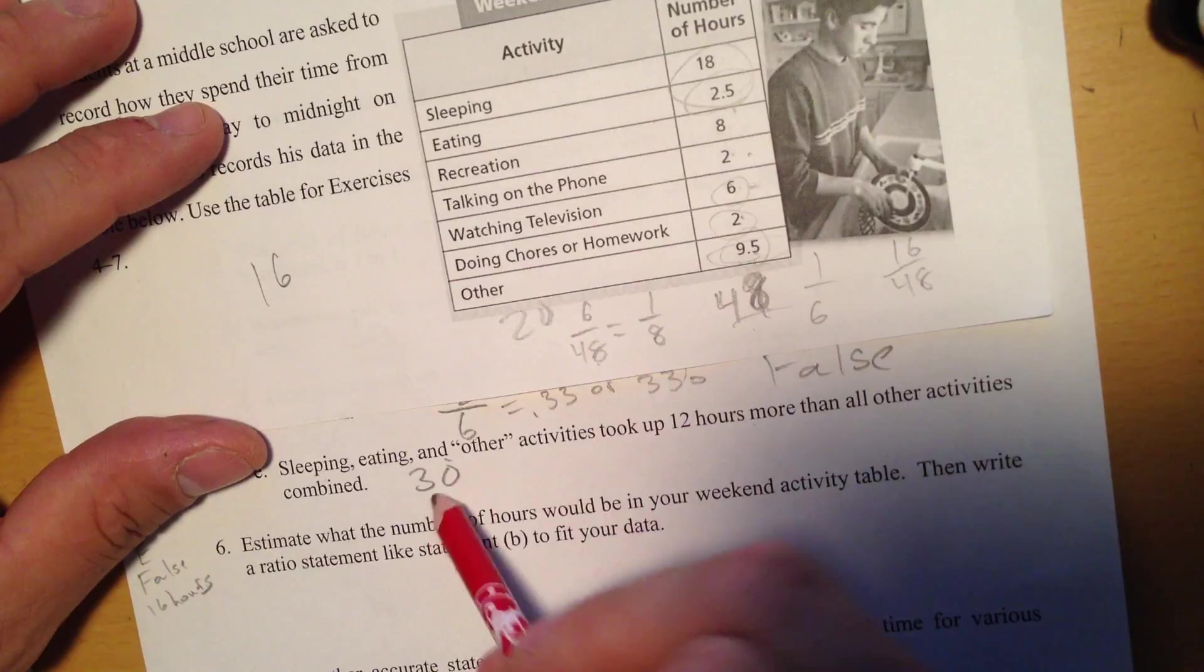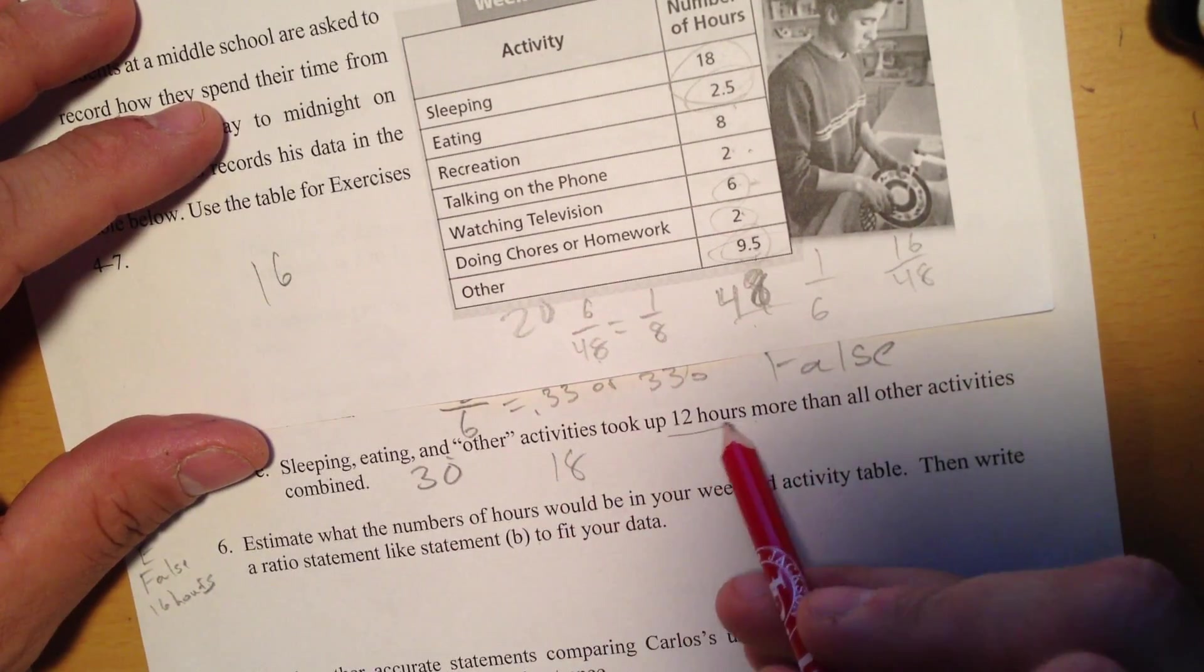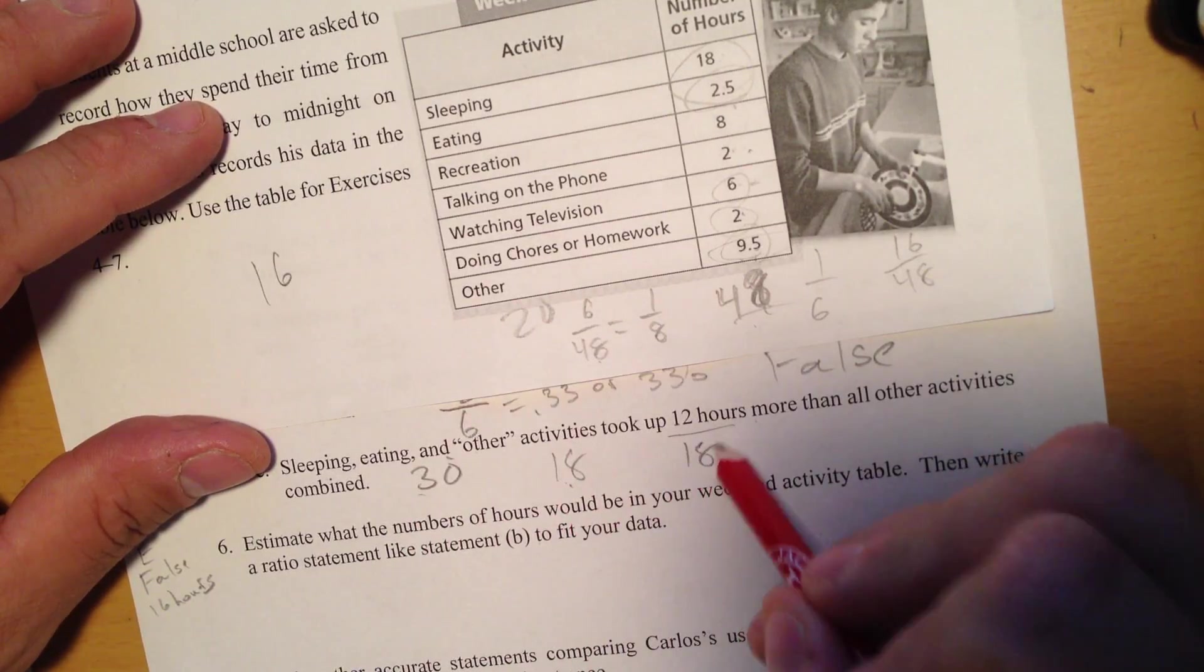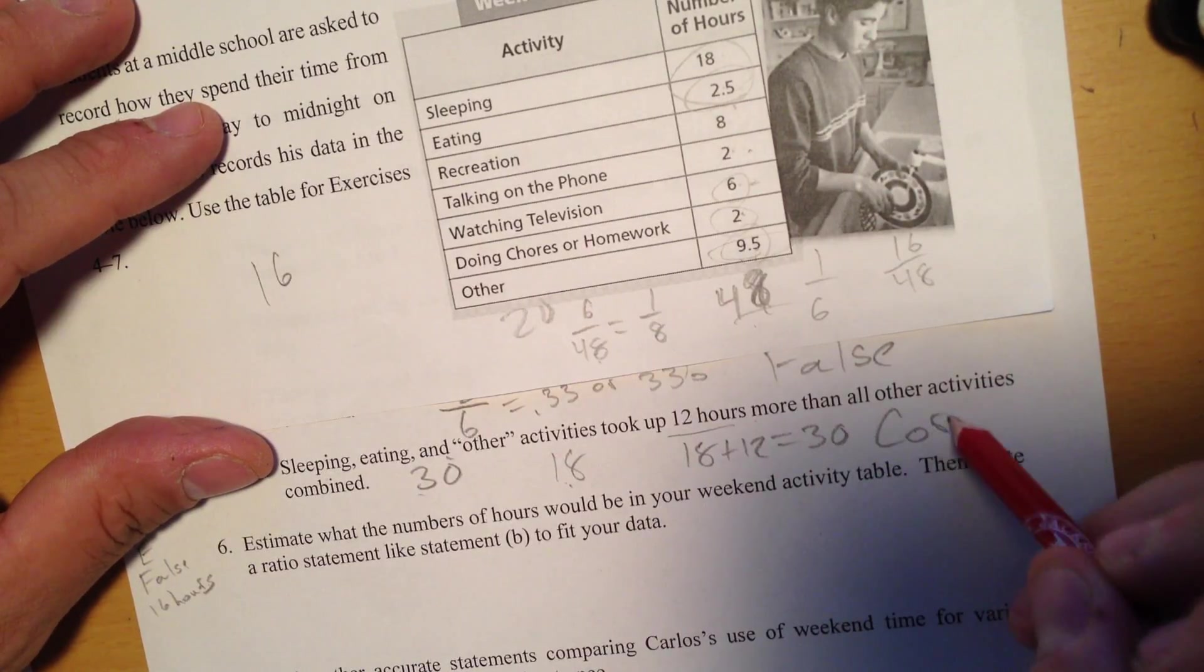Or 48 minus 30 gives me 18. So 18 is everything else. Now it says 12 hours more doing this. Well, if I add 12 to this, 18 plus 12 equals 30. So I'm going to say that's correct.